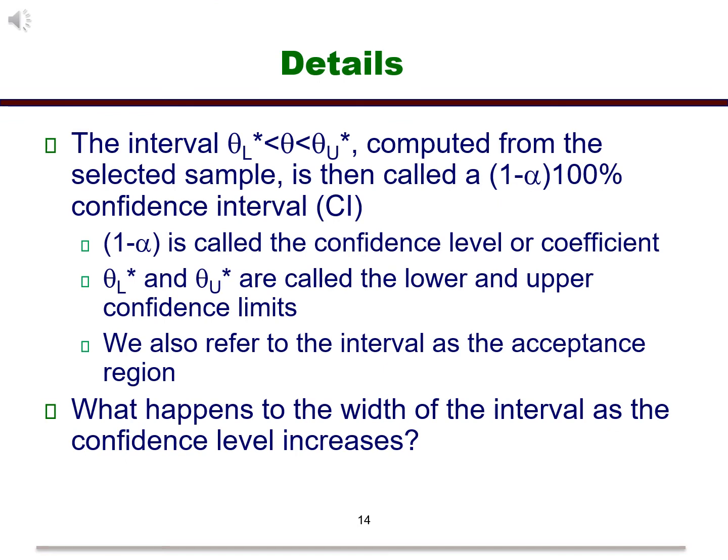Let's talk in a little more detail about the interval itself. The value 1 minus alpha is considered the confidence coefficient. The bounds for the interval are called the confidence limits. The interval is sometimes referred to as the acceptance region. This is based on an idea from hypothesis testing.